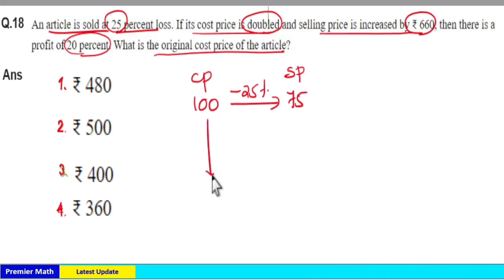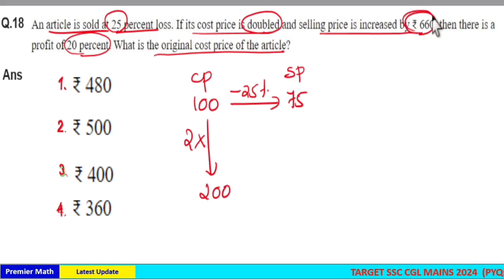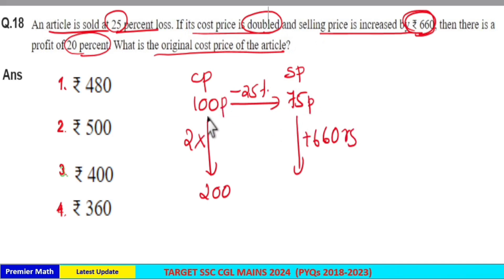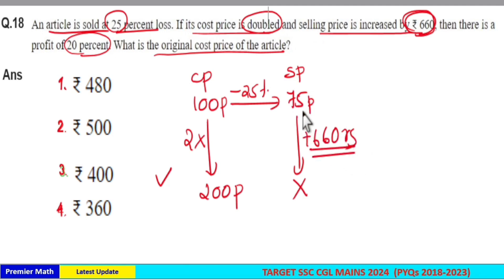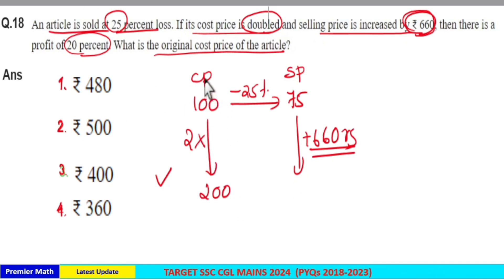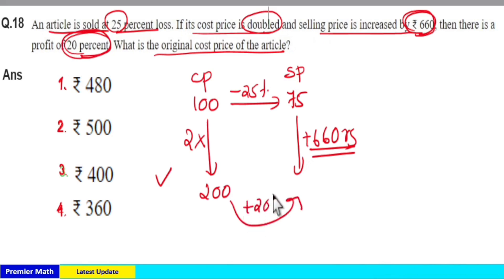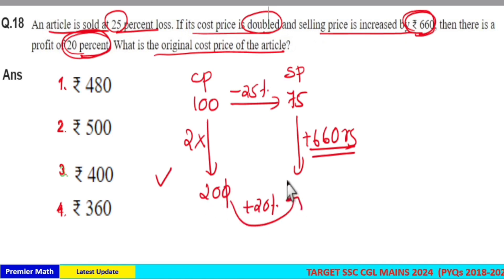If the cost price is doubled, take double of 100 which is 200 rupees as the current cost price. The selling price is increased by 60 rupees — but don't add this exact 60 rupees to the 75. The 75 came from the assumed 100, so you cannot directly add the actual 60 rupees to it. Instead, use the profit: when you double the cost price and increase the selling price by 60 rupees, the profit is 20%. So 20% of 200 is 40, giving a current selling price of 240 rupees.